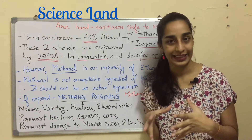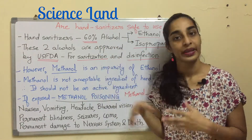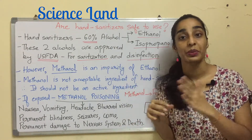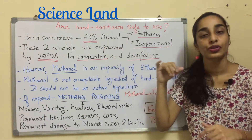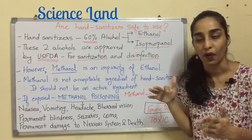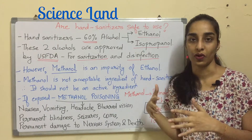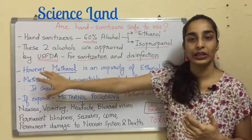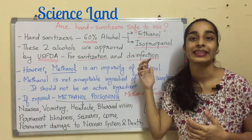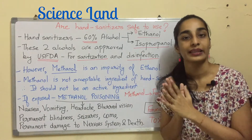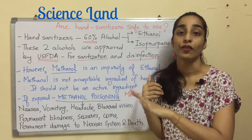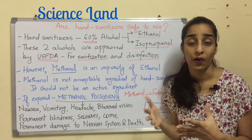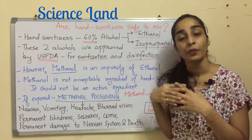Hand sanitizers, which are excessively used these days because of the corona pandemic, should ideally contain 60% alcohol — 60% is the minimum quantity; it can be more. This alcohol should be either ethanol (ethyl alcohol) or isopropanol (isopropyl alcohol). These two alcohols are approved by the US FDA for sanitization of hands and disinfection of surfaces.